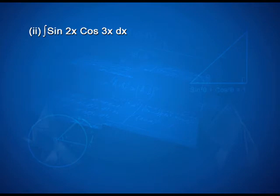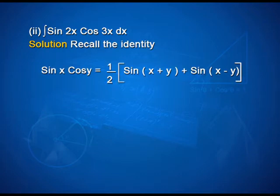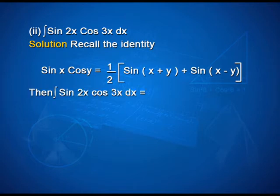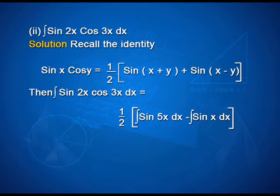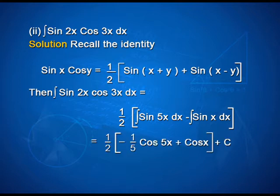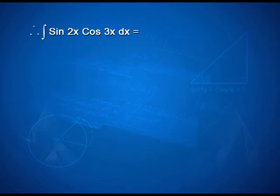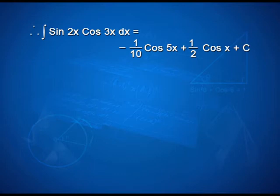Another example: to integrate sin 2x · cos 3x dx, we recall the identity sin x cos y = (1/2)[sin(x + y) + sin(x − y)]. Then, ∫sin 2x · cos 3x dx = (1/2)∫sin 5x dx − ∫sin x dx. That gives (1/2) · [−(1/5)cos 5x + cos x] + c. Therefore, ∫sin 2x cos 3x dx = −(1/10)cos 5x + (1/2)cos x + c.